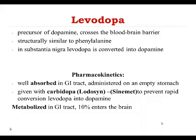Levodopa is administered orally because it is well absorbed in the gastrointestinal tract. We administer it with carbidopa, which prevents the conversion of levodopa to dopamine before it reaches the patient's brain. The second reason we administer levodopa with carbidopa is that it allows us to decrease the dose of levodopa, thereby reducing the side effects produced by levodopa.